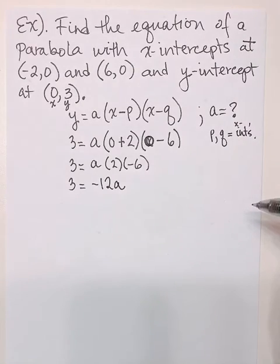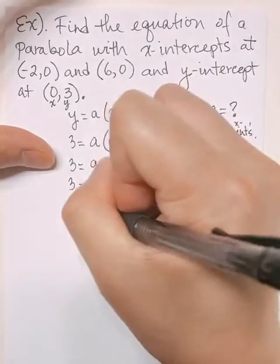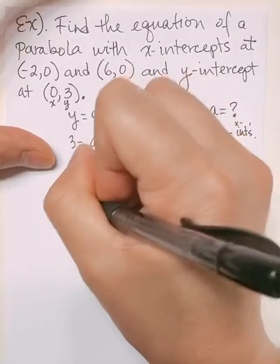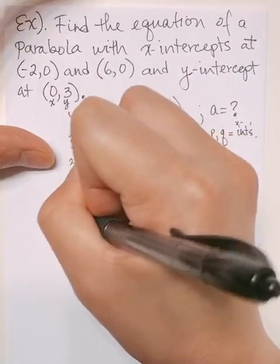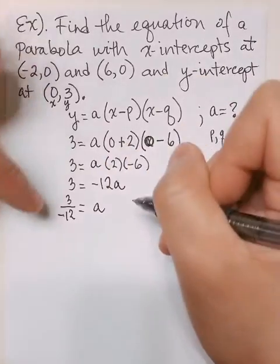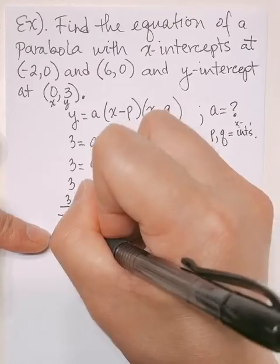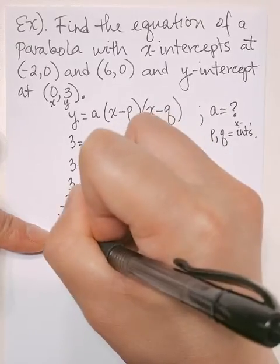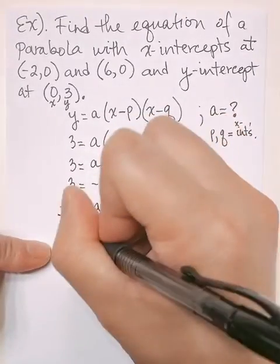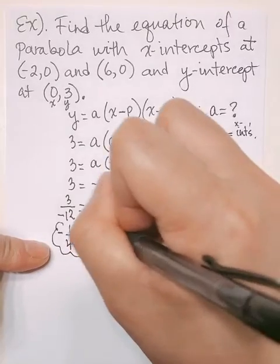To solve for a, divide both sides by -12 to get a by itself. So 3 divided by -12 can be simplified to -1/4. So your a value is -1/4.